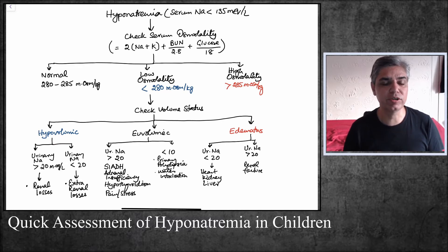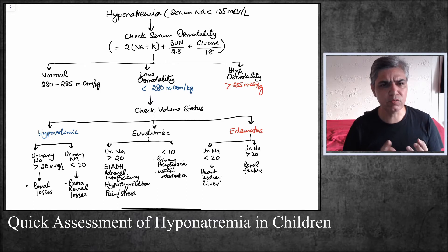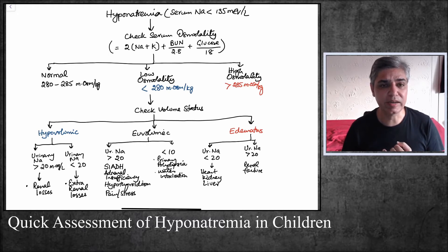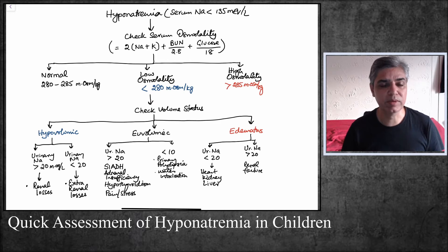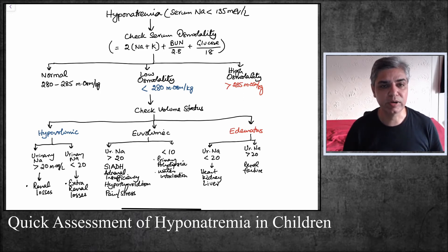Whenever you get hyponatremia on the child's electrolytes, the next step is to check serum osmolality, which is very simple to calculate. You need four things: sodium, potassium, blood urea nitrogen, and glucose. Sodium and potassium are in milliequivalents, while BUN and glucose are in milligrams per deciliter. The formula is: (sodium + potassium) × 2, plus BUN divided by 2.8, plus glucose divided by 18. That gives you your serum osmolality.